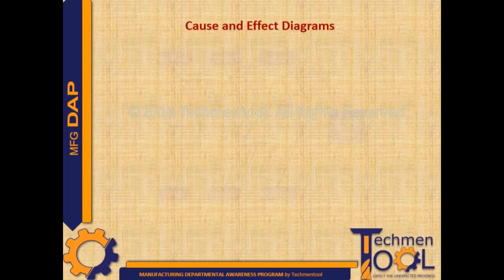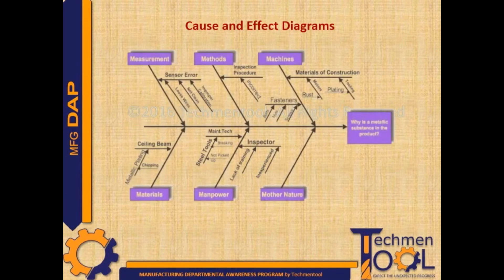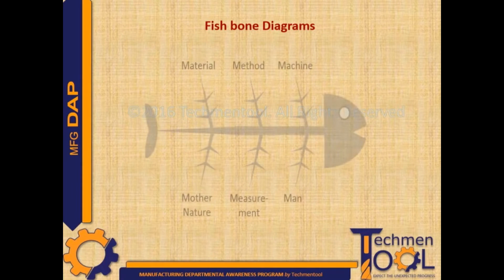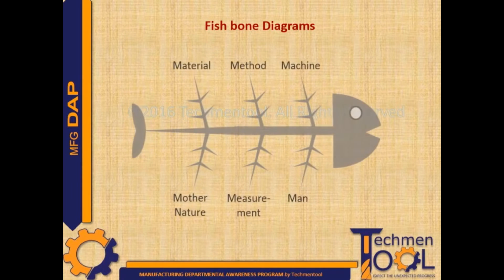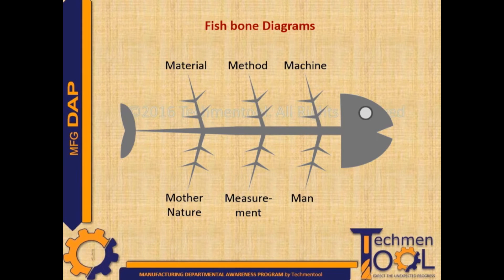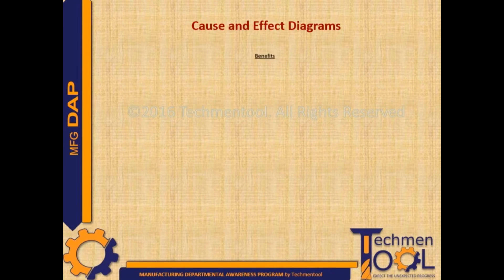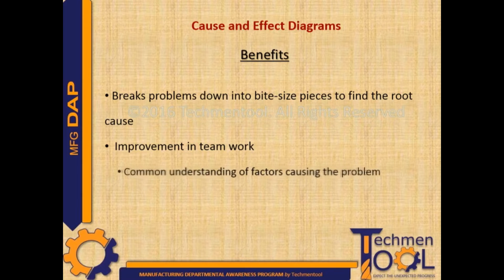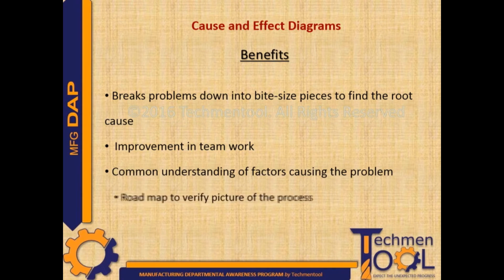This is the sample construction of a Cause and Effect Diagram. Benefits include: breaking problems down into bite-sized pieces to find the root cause, improvement in teamwork, a common understanding of factors causing the problem, and a roadmap to verify the picture of the process.